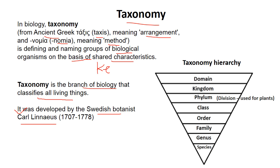There is also a taxonomical hierarchy with different groups. At the top is the domain, which is divided into kingdom, and kingdom has phylum. In the case of plants, instead of phylum, we use division. Then come class, order, family, genus, and species. This is the taxonomical hierarchy.